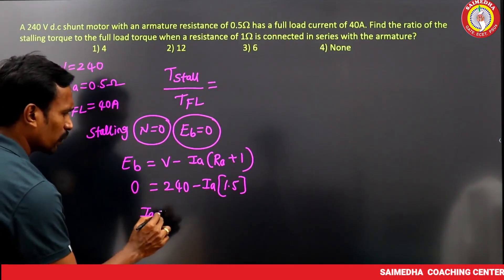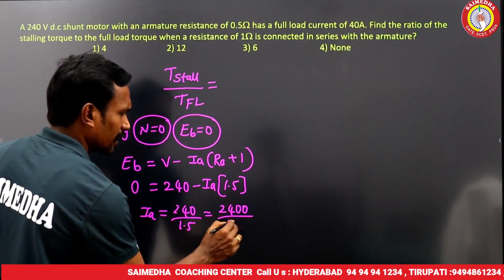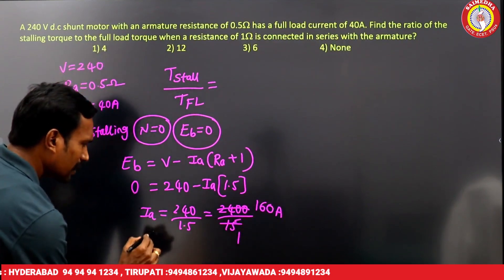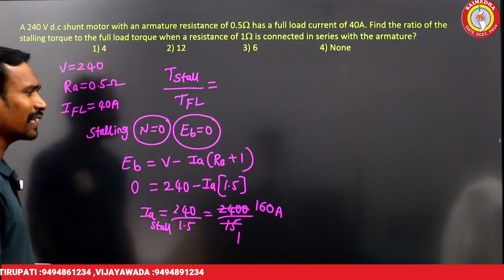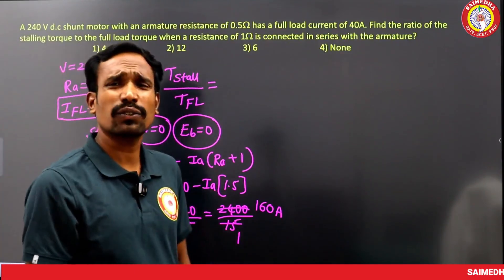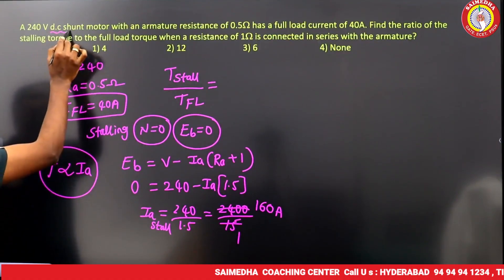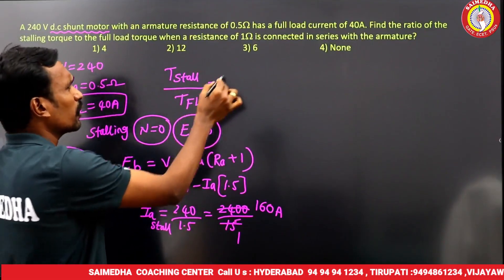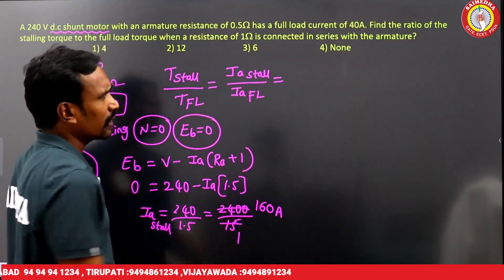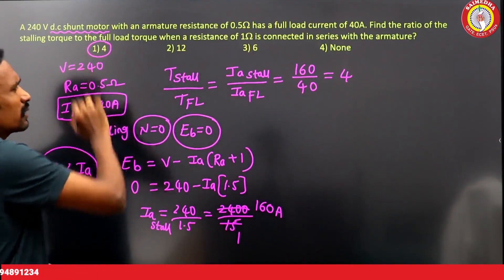Ia(stalling) = 240 / 1.5 = 160 amperes. Full load current is 40 amperes. Since torque is directly proportional to Ia for a DC shunt motor, the stalling torque to full load torque ratio = 160 / 40 = 4.